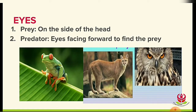Next is eyes. Prey animals have eyes on the side — for example, frogs, cows, horses, chickens, and zebras. Predators have eyes facing forward to help find and attack prey — for example, lions, cheetahs, owls, monkeys, and tigers. These are the structural adaptations.